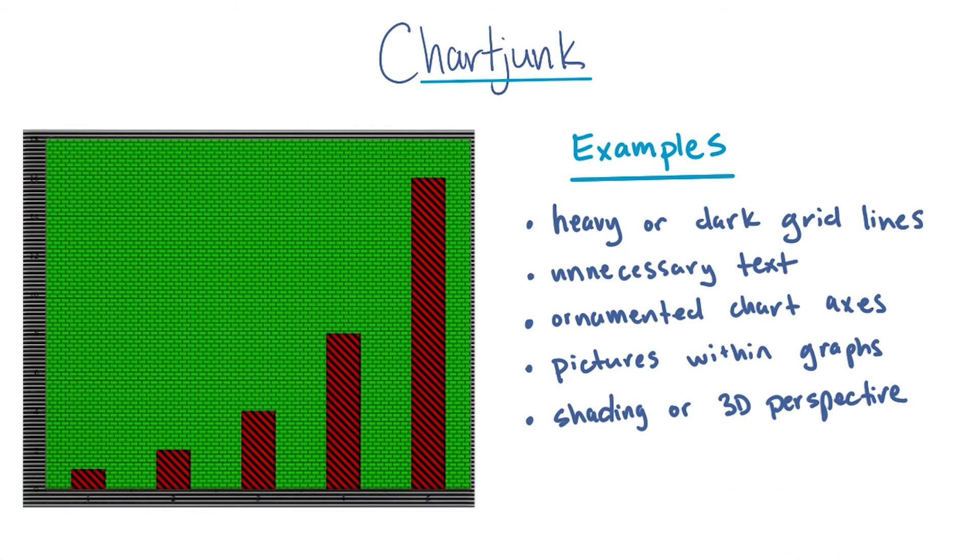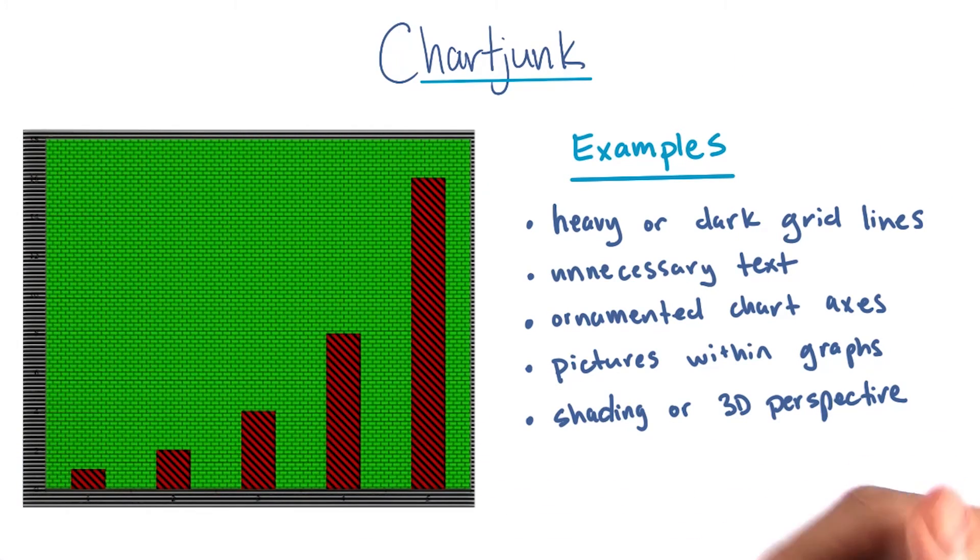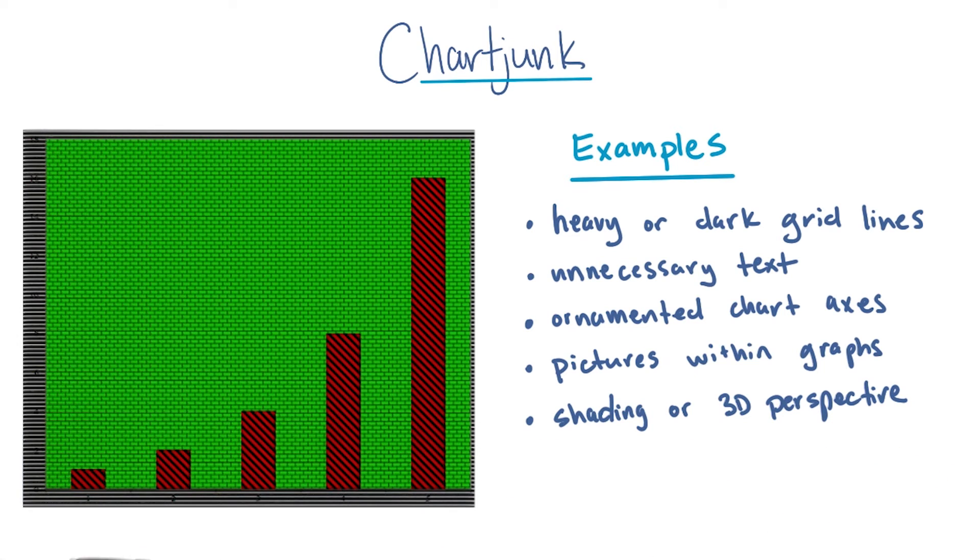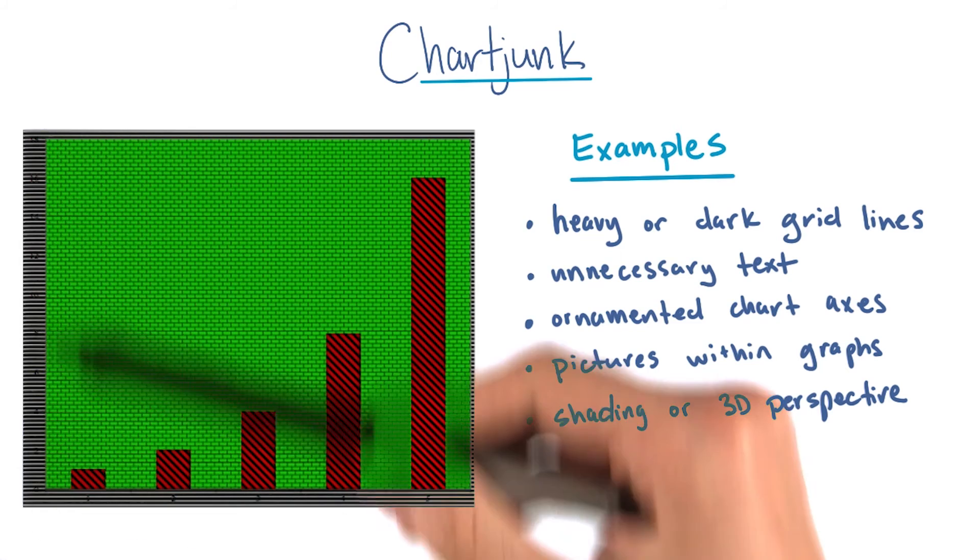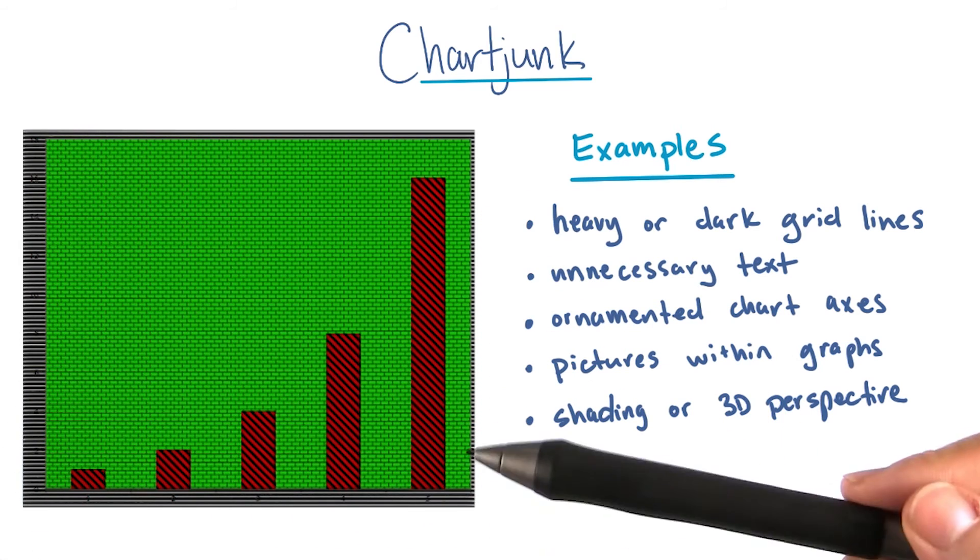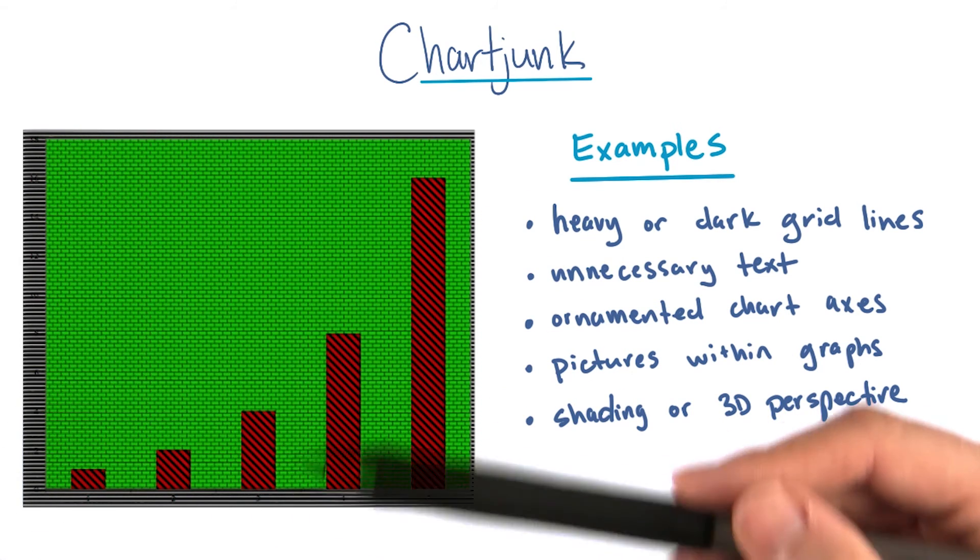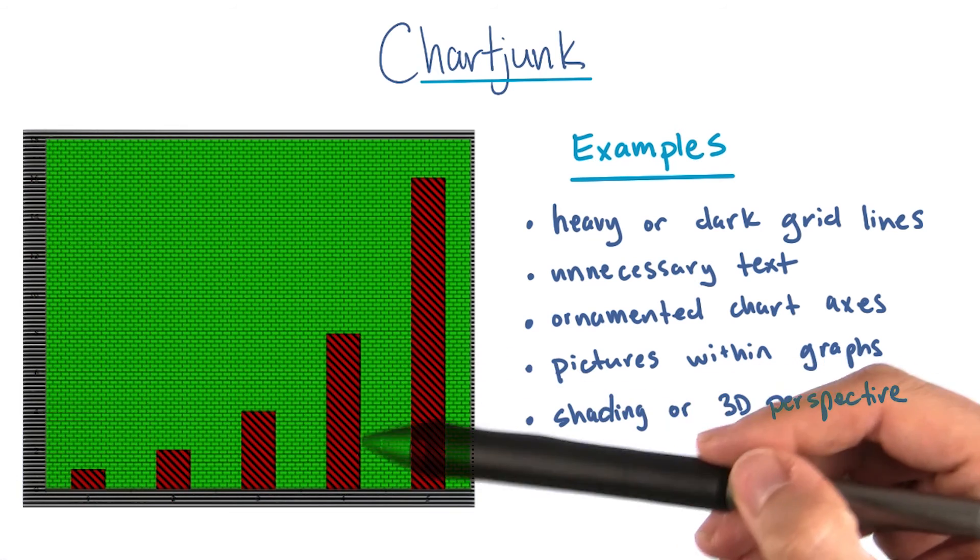This visualization shows how chart junk obscures the data, which is just five simple numbers: 1, 2, 3, 4, and 5. We see here ornamented chart axes which obscure the actual numbers underneath, and also the use of shading and textures on both the bars and the background.